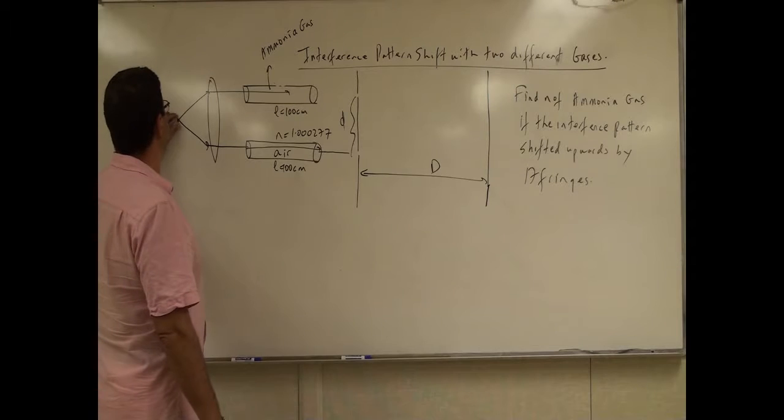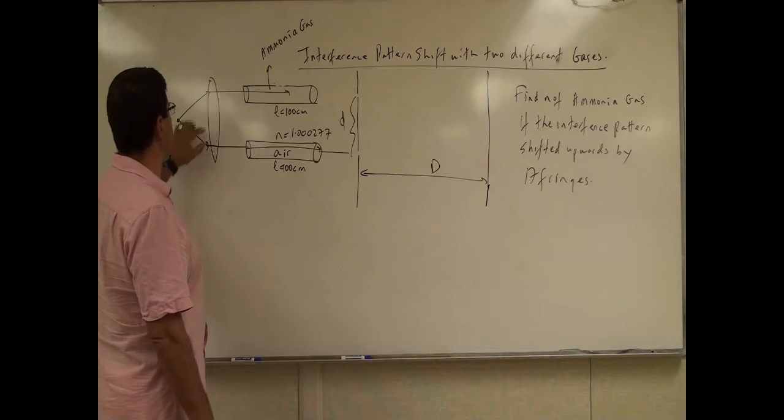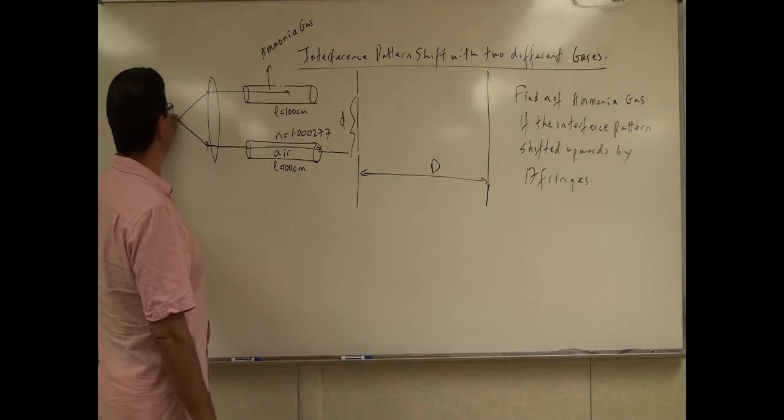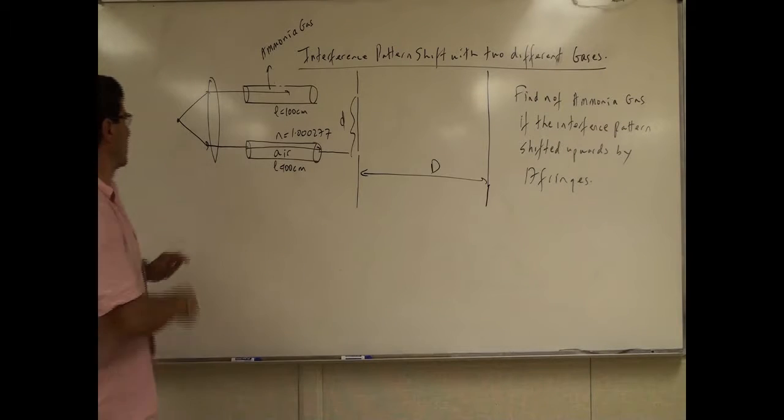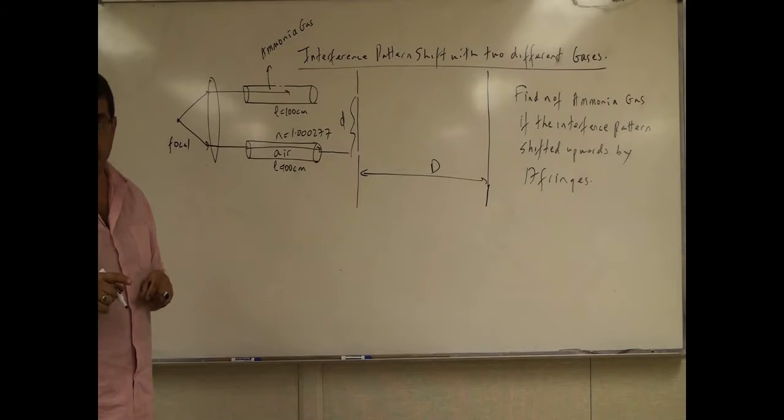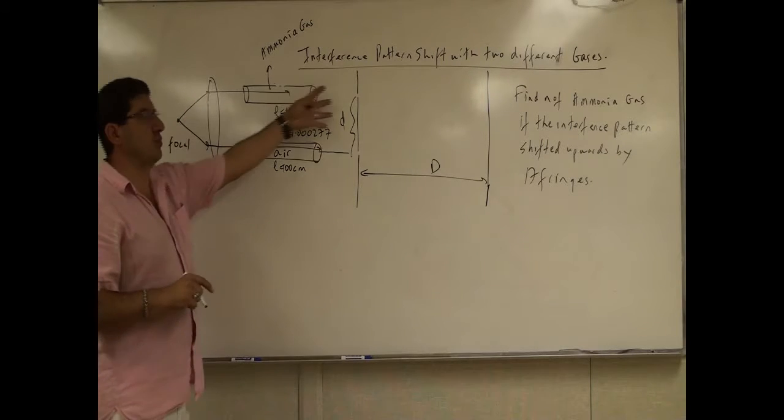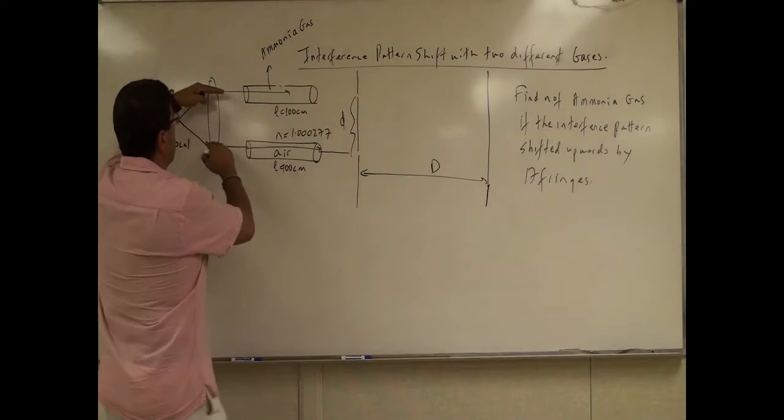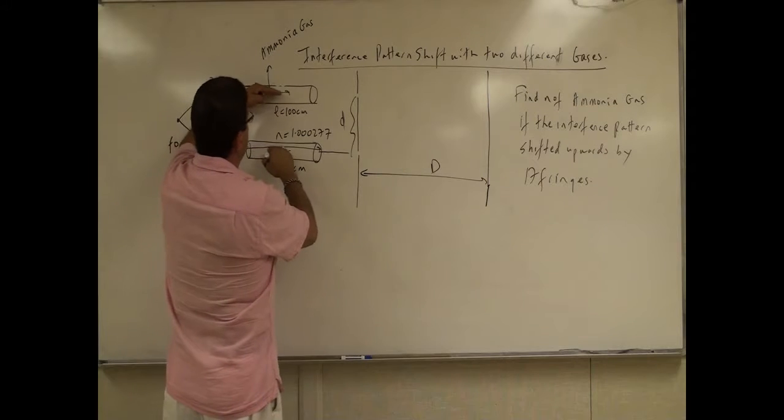We have a point source of light. We put it at the focal length of a converging lens and then the light goes. Because we know from optics when you put the light source at the focal point of a converging lens, then the image will be produced at infinity. So the light waves will travel horizontal.